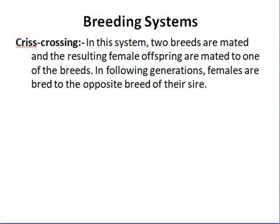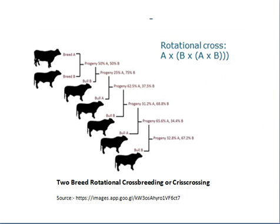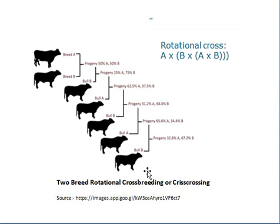Crisscrossing involves mating two breeds, then mating the resulting female offspring to one of the parent breeds in alternating generations. For example, breed A is mated with breed B to get progeny, then that progeny is mated with bull B, then back to bull A, and so on. This rotational crossbreeding helps maintain heterosis. For instance, we might maintain 32% breed A and 68% breed B. This is commonly used in beef cattle.